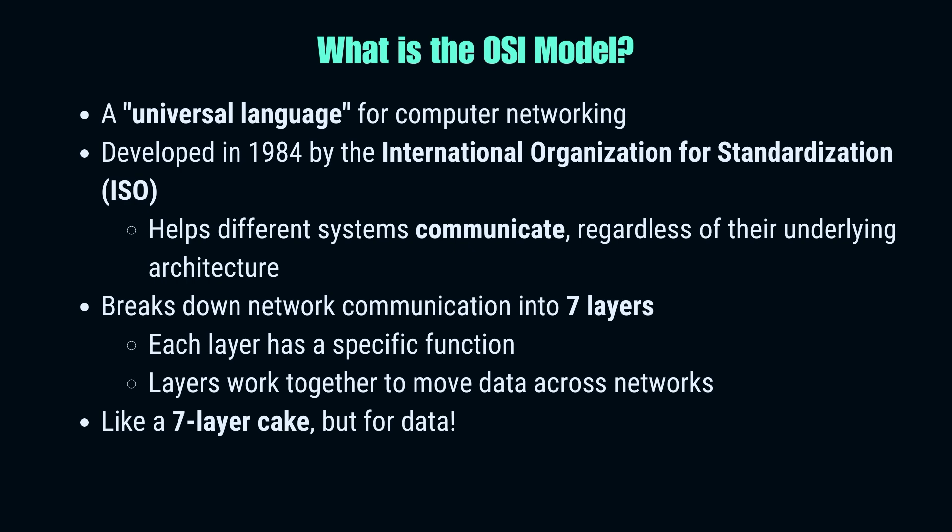The OSI model, or Open Systems Interconnection model, is like a universal language for computer networking. Developed in 1984 by the International Organization for Standardization, it breaks down the complex process of network communication into seven distinct layers. Each layer has a specific job, and they all work together seamlessly to move data across networks. Think of it as a team of specialists, each with their own crucial role in getting your data from point A to point B — the ultimate blueprint of how data zips across the digital universe.